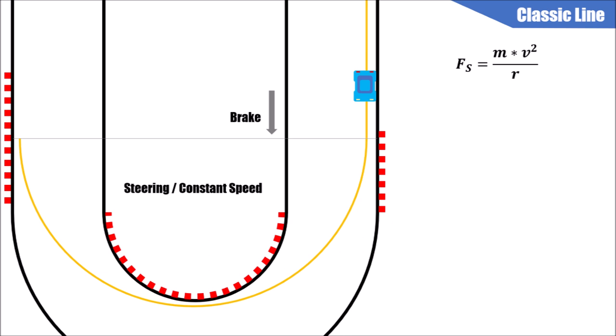Why the largest possible radius? If we look at the formula for side force, we can see that more mass and more velocity increase the side force, but a larger radius reduces it. Less side force means we reach the tire limit later and can go faster.